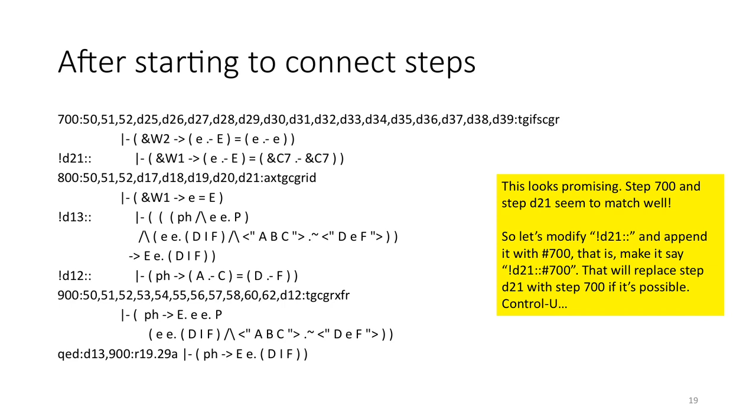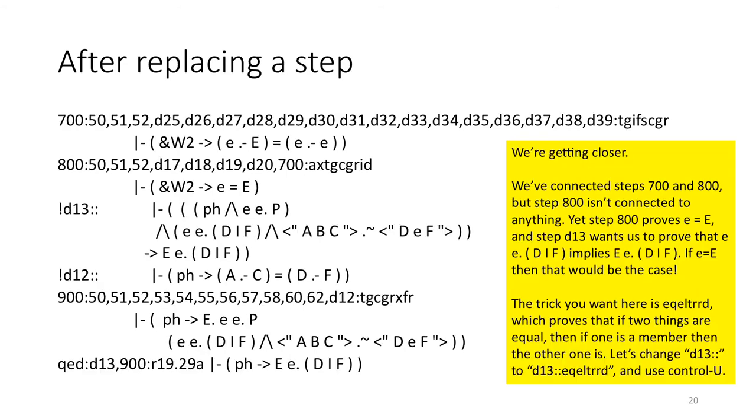Now this looks promising. Step 700 and step D21 seem to match well. So let's modify the D21 and append it with a sharp 700. In MMJ2, that will replace step D21 with step 700 if that's possible. Then we'll do CTRL-U.